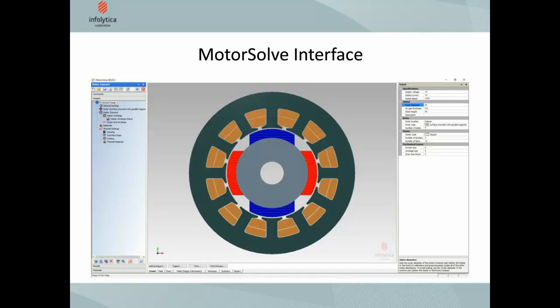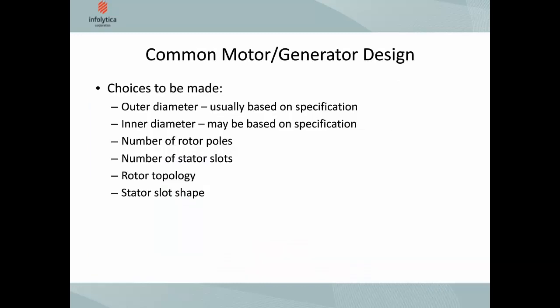At the initial stage when you start up Motorsolve, the geometry is available to you. The choices you want to make first include the outer diameter — usually based on your specification — and the inner diameter, which may also be based on a specification such as a shaft diameter. Where you'll have more freedom is the number of rotor poles, number of stator slots, rotor topology, and stator slot shape.